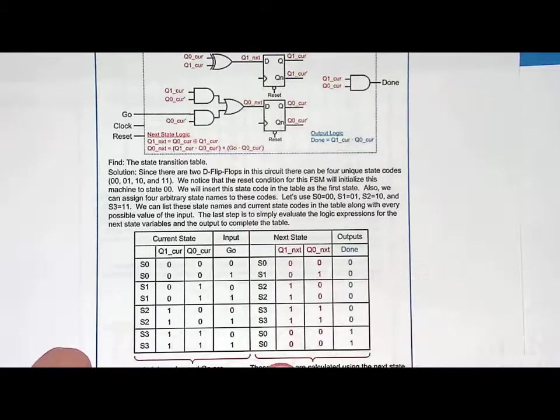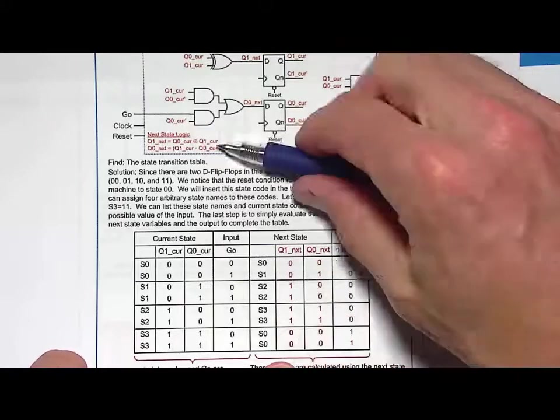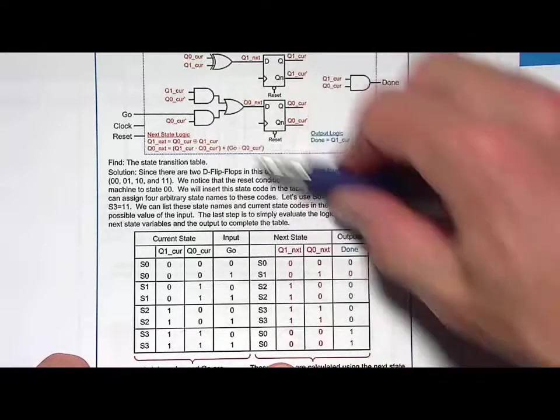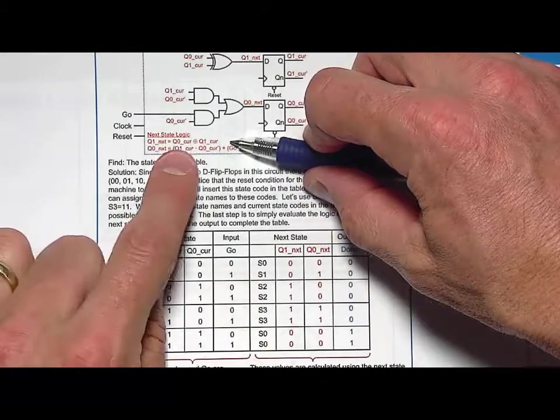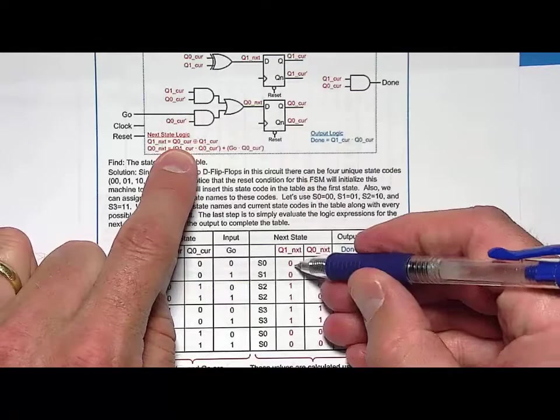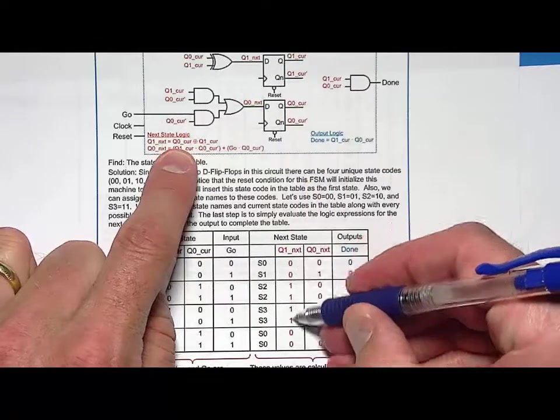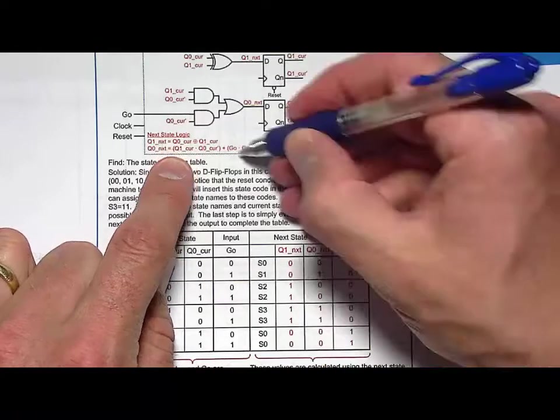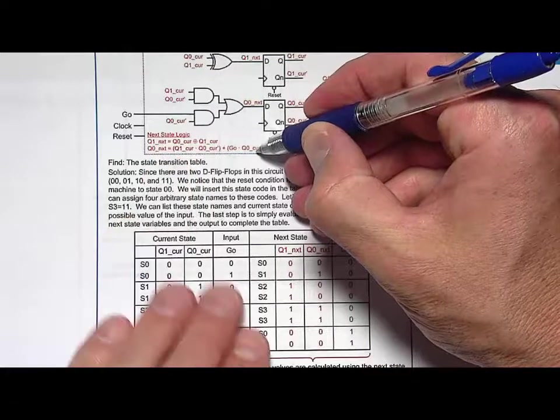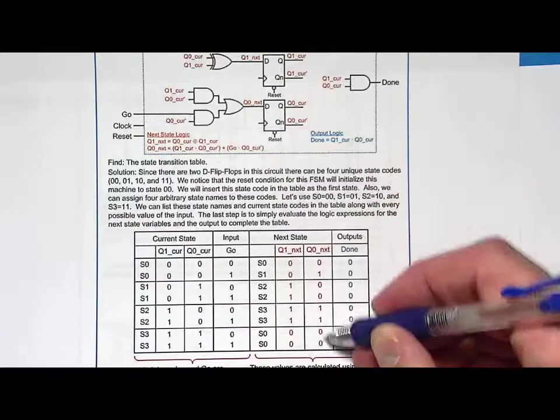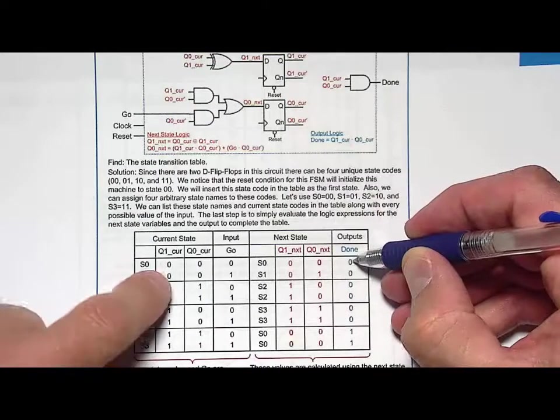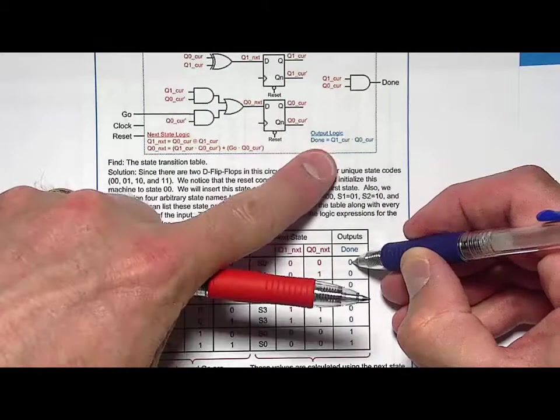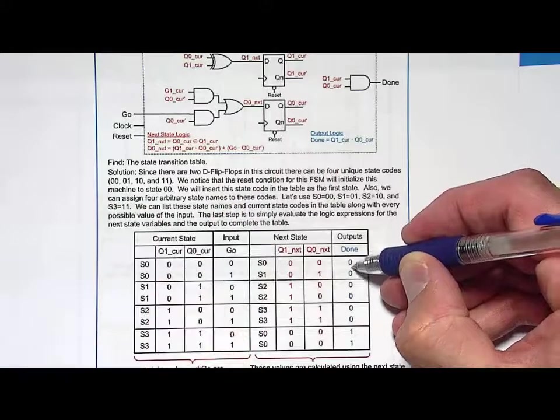How do you know what these values are? Well, you simply use the logic expressions that you had already found. For q1next, you plug in all the input codes given here into this logic expression, and that allows you to derive what these values are. For q0next, you use this logic expression, plug in these input codes, and then you derive all that. Same thing for the output logic done. You use this logic expression here, use these inputs, and derive what they are.